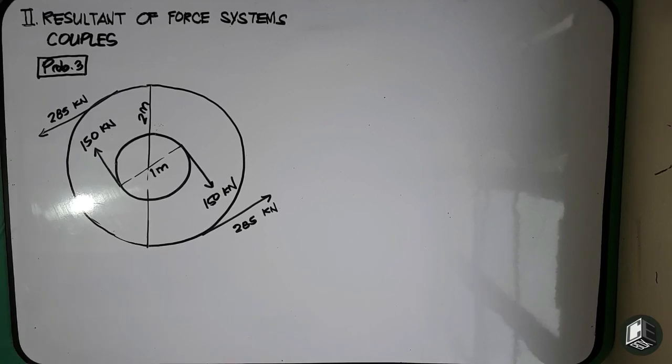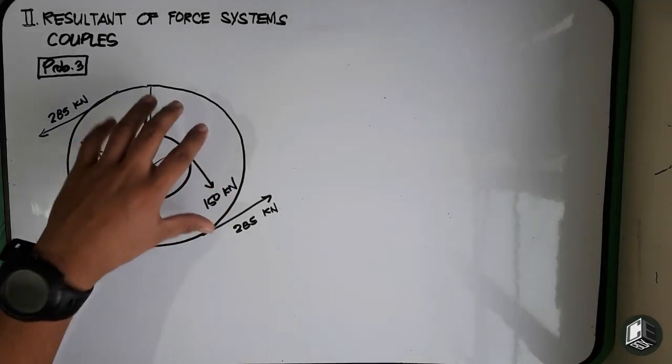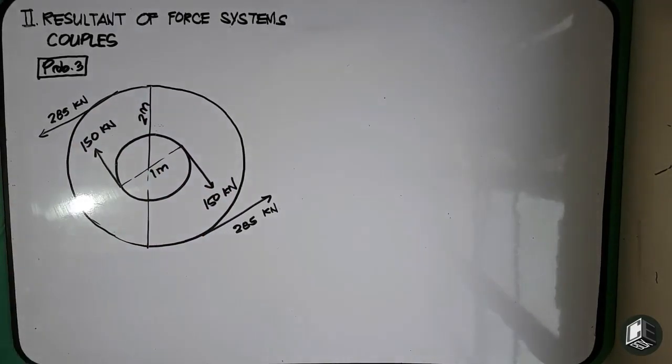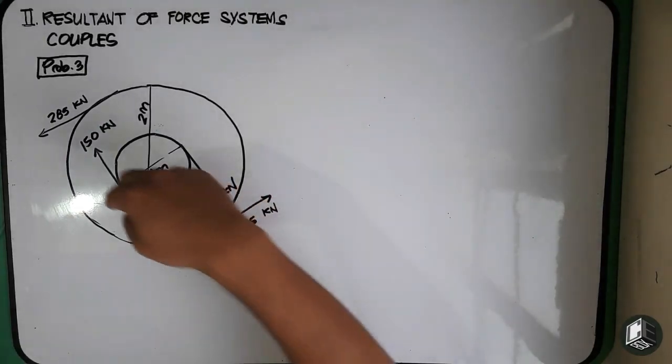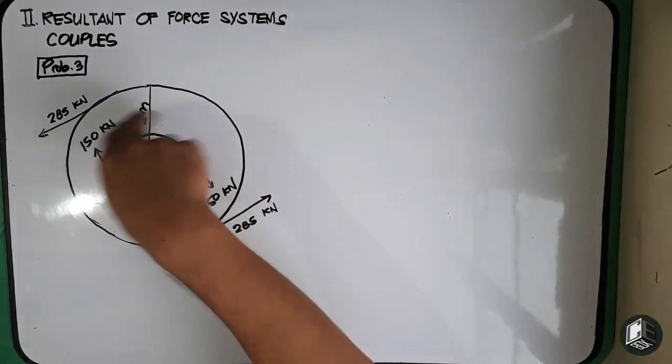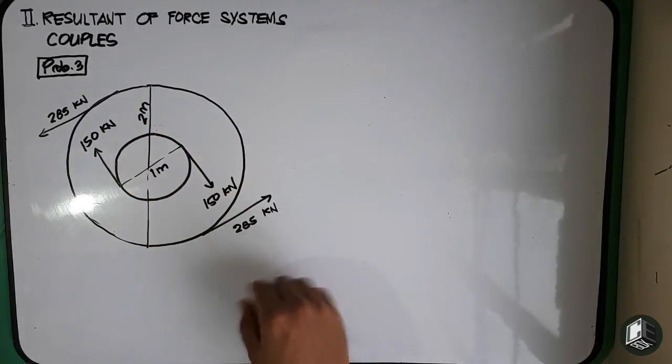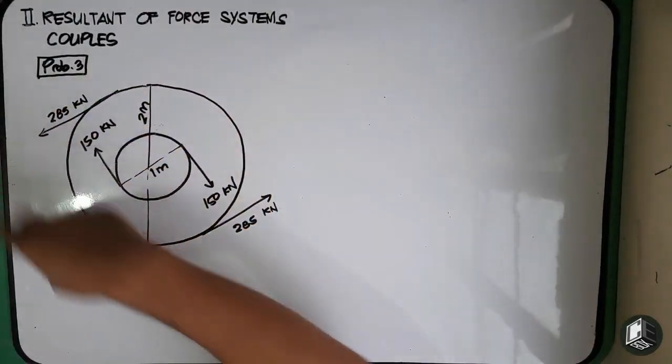So subdoor natin yung overall couple for these two pulleys. Yung isang natin may mapag-create ng dalawang couple dito, isang couple one for the clockwise created by 150 kN and counterclockwise na mag-create ng ating 285 kN.